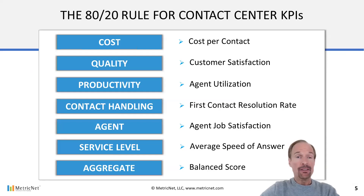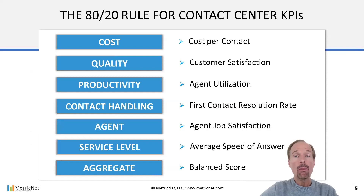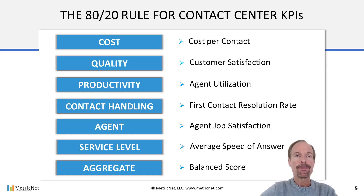Let's discuss why these are the KPIs. Cost per contact is your primary measure of efficiency in the contact center, and customer satisfaction is your primary measure of effectiveness. Cost per contact and customer satisfaction are what we refer to as the foundation metrics, because they are the two most important metrics you can track in the contact center. If you do nothing else after taking this course, you should commit to tracking cost per contact and customer satisfaction. The next two metrics are the key drivers of cost and quality.